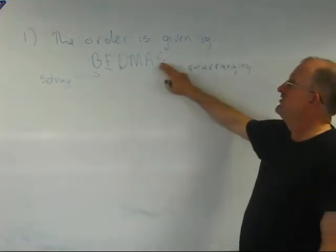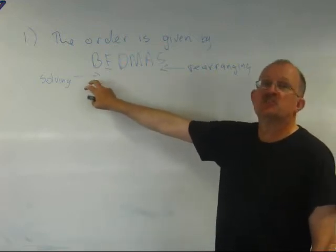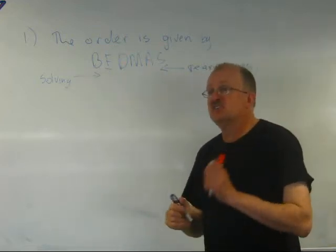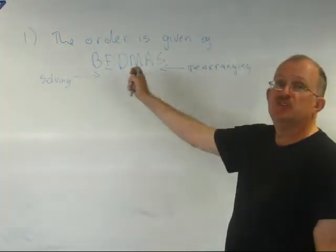So order rearranging again is subtraction, addition, multiplication, division, exponents, brackets. Okay, so that's rule number one. The order is important and that's how we determine the order.